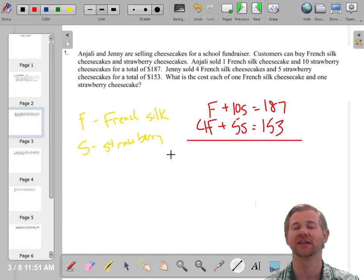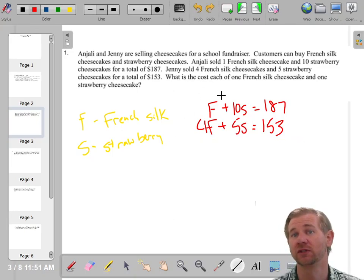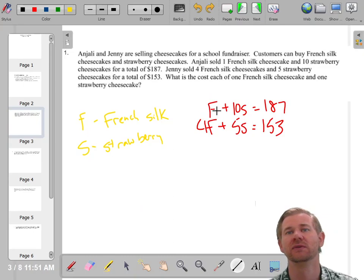Once you get to here, it should feel like any other system you've solved a million times. You could do substitution or elimination. If I was going to do substitution, I'd probably get F by itself, but I'm going to just multiply this by negative four. So I'll do that down here. I'm going to multiply everything in this by negative four. I'll do elimination.